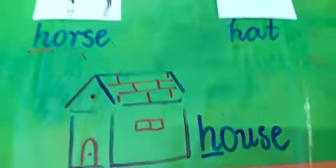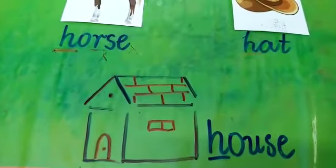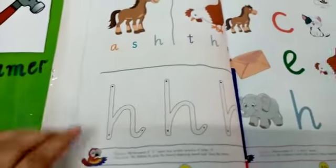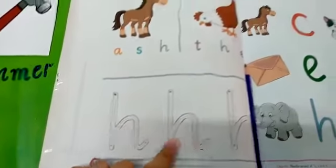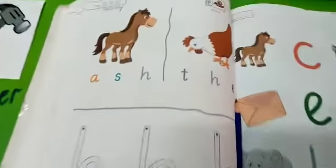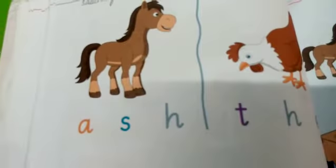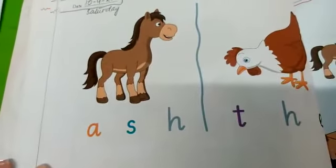Now you have to take out your English workbook, page number 58. This is the page — this is the reinforcement of H. We have two pictures over here, and you have to circle the beginning letter of each picture.